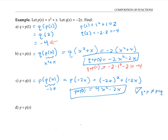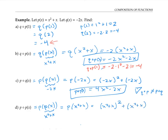Please pause the video and try this last example yourself. Rewriting and working from the inside out, we replace p of x with its expression x squared plus x. Then we evaluate p on x squared plus x — plugging x squared plus x everywhere we see an x in the formula — giving us x squared plus x, quantity squared, plus x squared plus x. Distributing, that gives x to the fourth plus two x cubed plus x squared, plus x squared plus x, or x to the fourth plus two x cubed plus two x squared plus x.